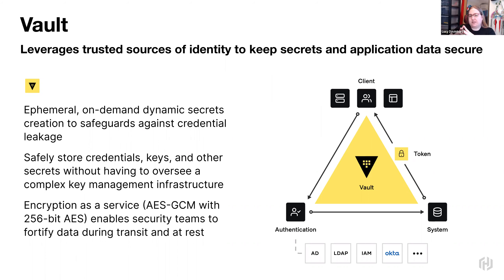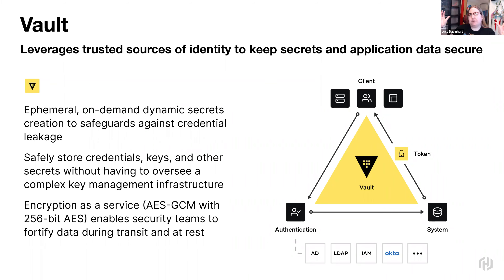The next thing people tend to use is what we call on-demand dynamic secrets — database credentials, for example. The way this works is that Vault can actually generate ephemeral credentials for a number of different systems, and Vault manages the full secret lifecycle, revoking it after a certain amount of time. This reduces secrets being reused — each application only accesses what it needs, only for the amount of time it needs, with each instance having its own unique set of credentials.